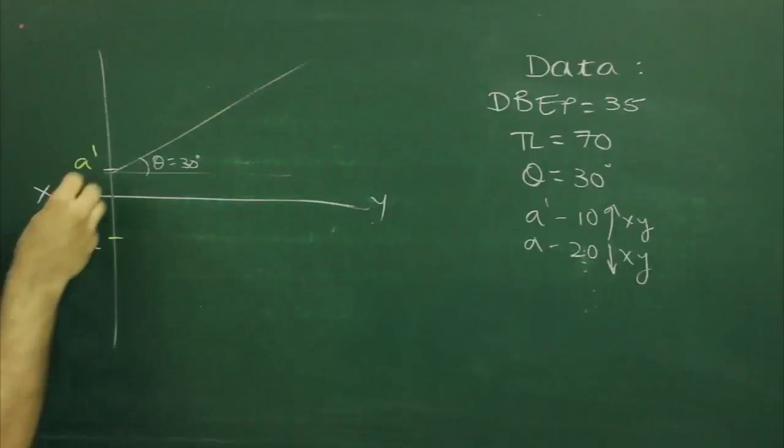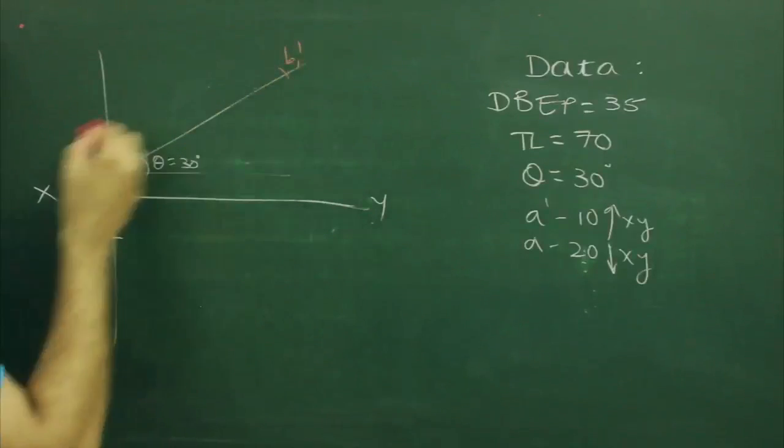On theta, we can mark the length, so we can get B1 dash.